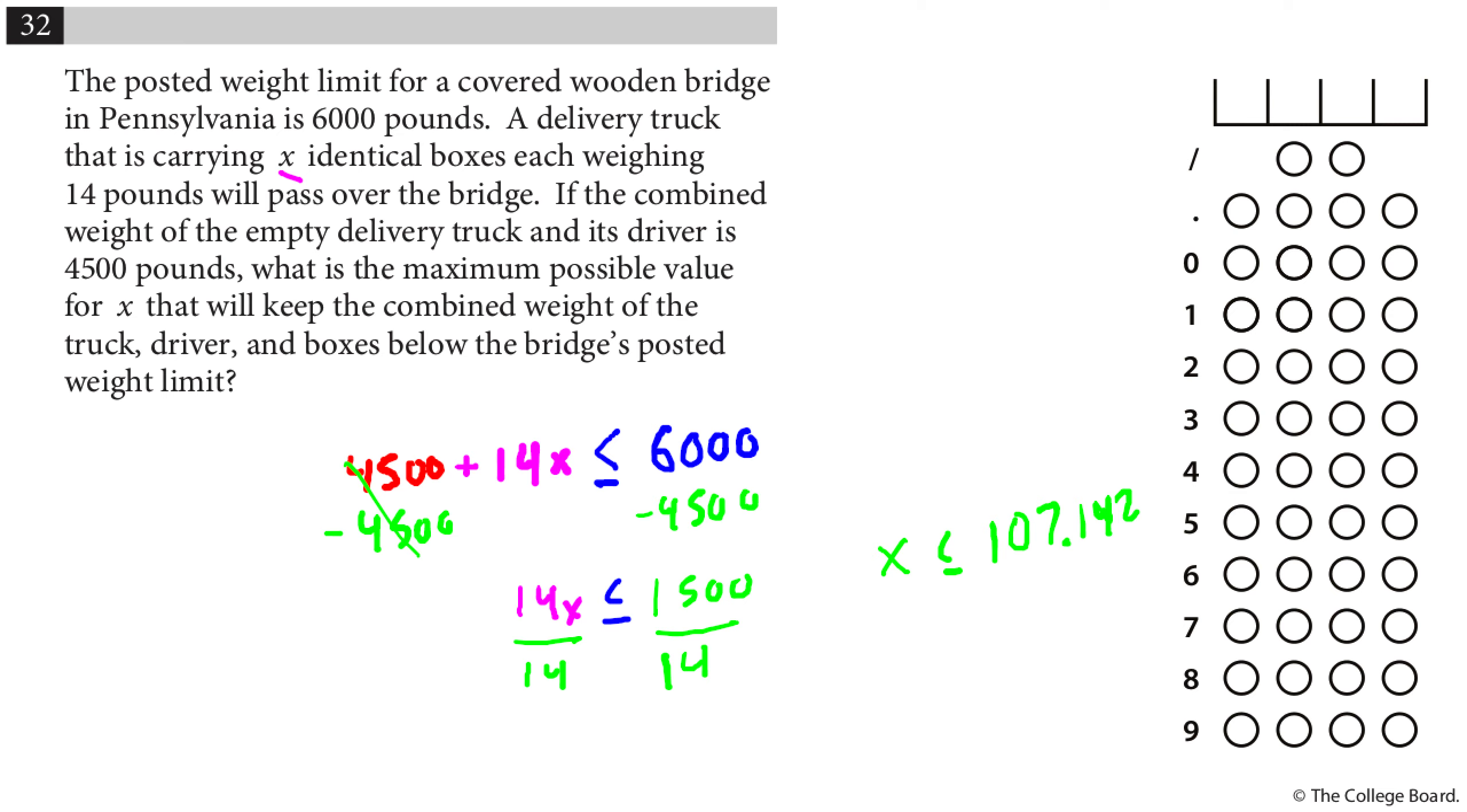And now, I can't take part of a box. You're not going to take a chainsaw and cut this box into seven parts to get that full thing. So what's the maximum possible value for X that I can have? Well, I can have at most 107 boxes. So I'll right justify 107. I bubble in the 1, bubble in the 0, bubble in the 7.